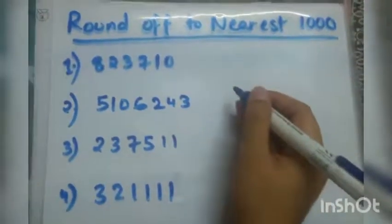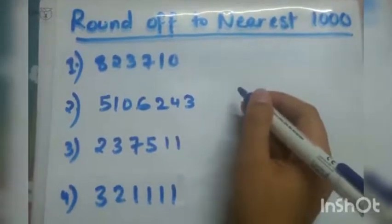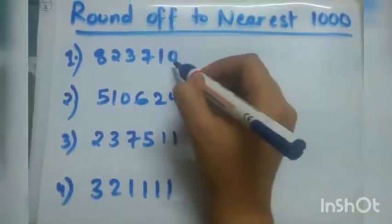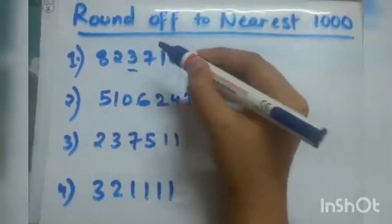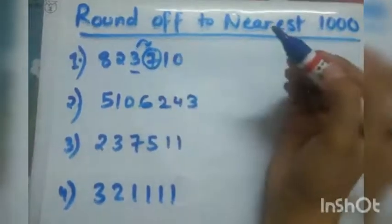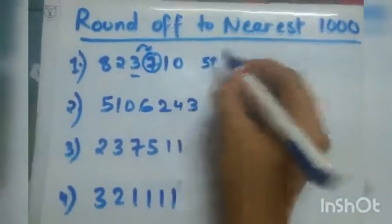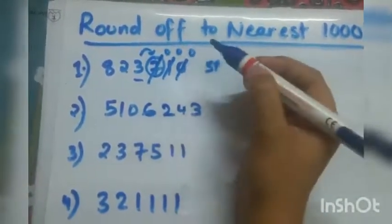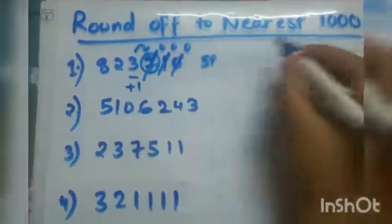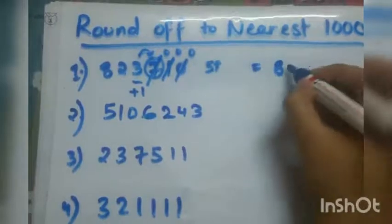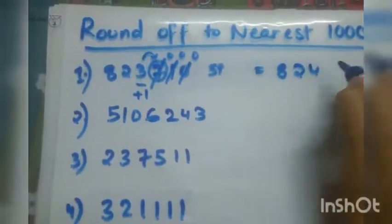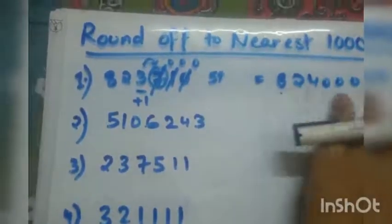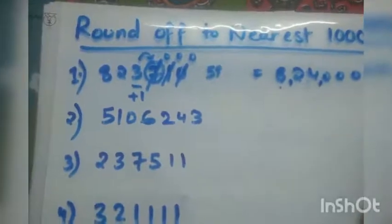Now we will take some larger numbers. In this example, the thousands place digit is 3, and to the right of 3 is 7. Since 7 is greater than 5, we do round up — 7's place becomes 0, 1's place becomes 0, 0 is already there so that place also becomes 0, and 3 gets plus one. So the answer is 8,24,000.